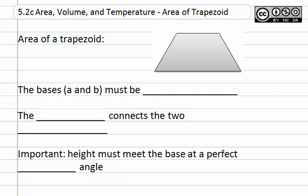5.2c, area, volume, and temperature. Area of trapezoids.